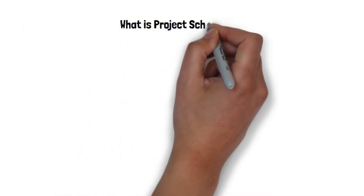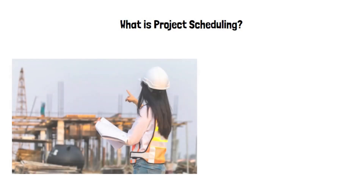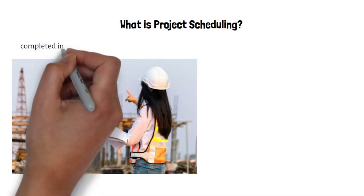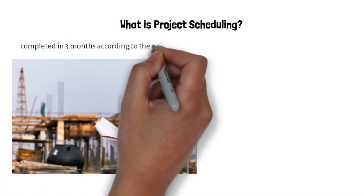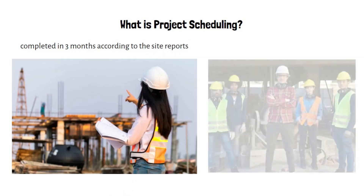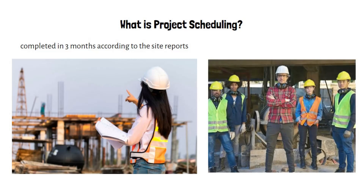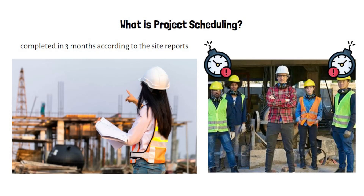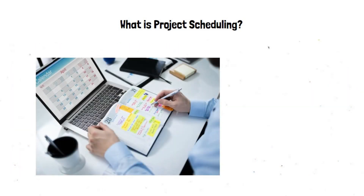For example, let's say your construction project will be completed in three months according to the site reports — is this enough information regarding the performance of your project? If your schedule baseline shows a two-month completion, you can notice a delay and motivate your team members to take action in order to catch up with the deadline. Many organizations and project teams across all industries have different approaches to building workable schedules.